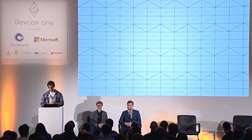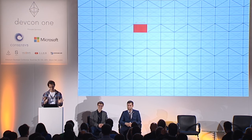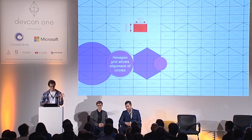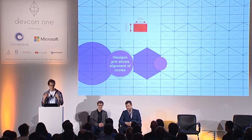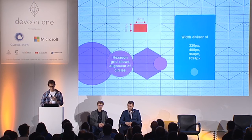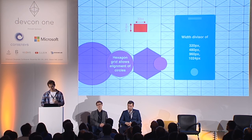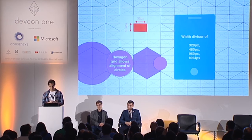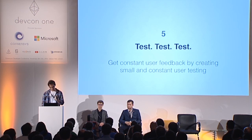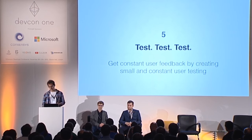My fourth point is to use grids — that applies to everything a designer makes. We use a grid of 32 pixels by 18.4 pixels. Why 18.4 height? Because it allows me to have hexagons on my grid, which lets you centralize circles — always nice for some designs. We use 32 pixels because it's a divisor of 320, 480, 960, and 1024, which covers a range of mobile and multiple screen sizes.